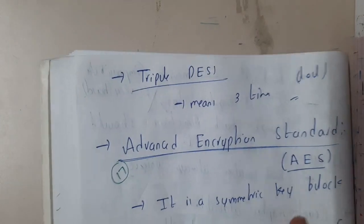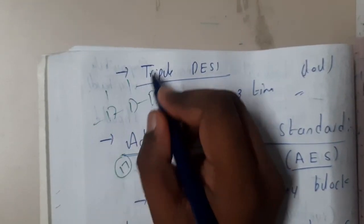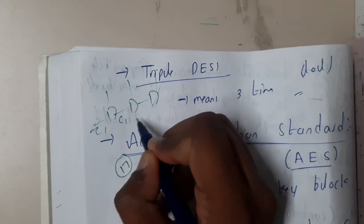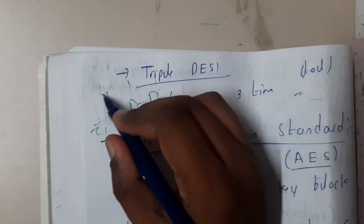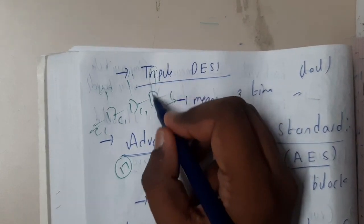The same diagram you can draw for triple also. Draw three boxes. The input will be for the other. Assume that this is D1 and C1, C2, and you will be getting C3 here with K1, K2, K3.